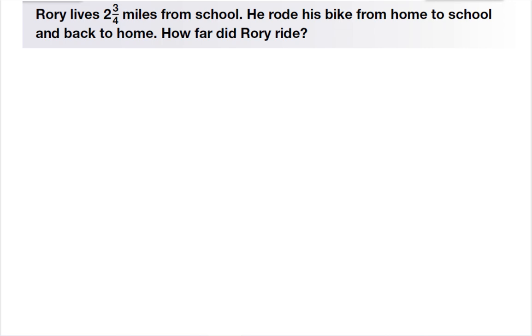So this next problem says, Rory lives 2 and 3 fourths miles from school. He rode his bike from home to school and back to home. How far did he ride? So I'm going to add up these two numbers. So we have 2 and 3 fourths plus 2 and 3 fourths. 3 fourths plus 3 fourths is 6 fourths. 2 plus 2 is 4.